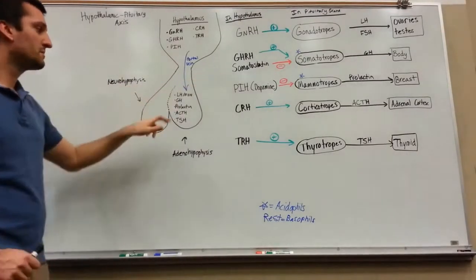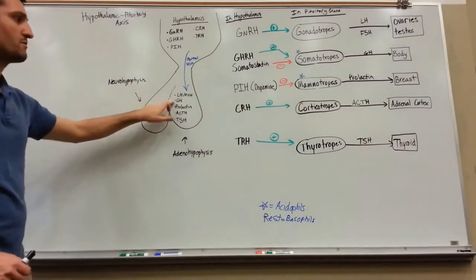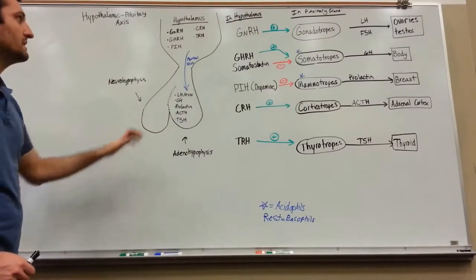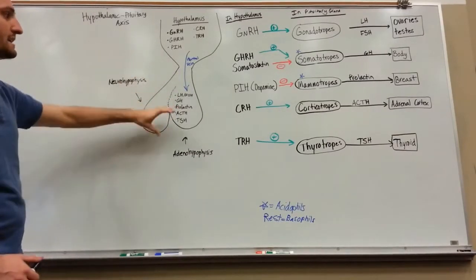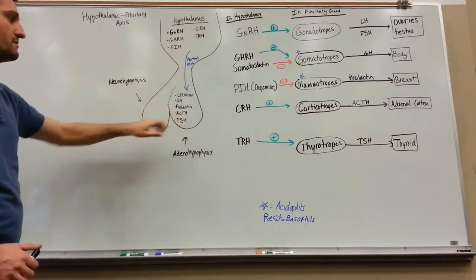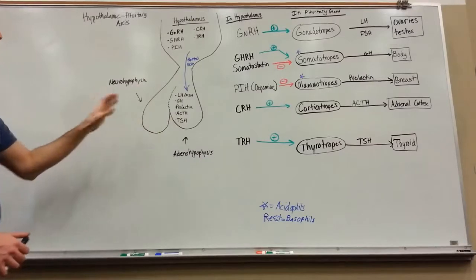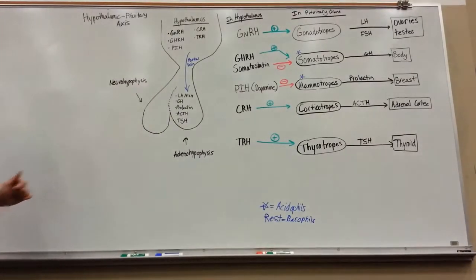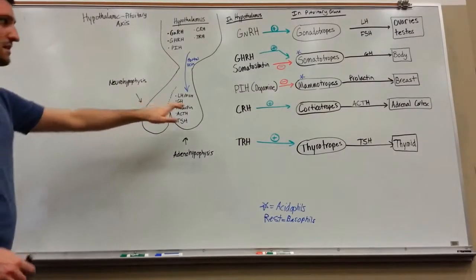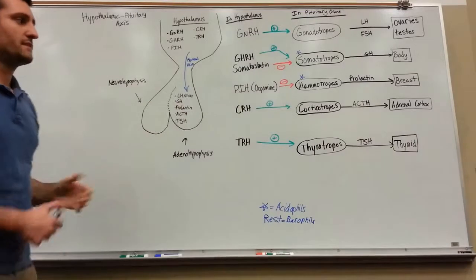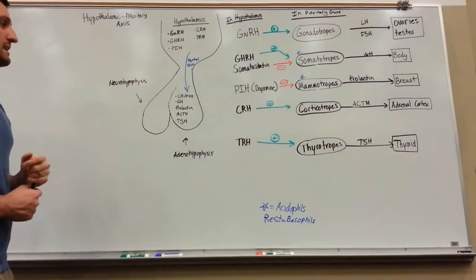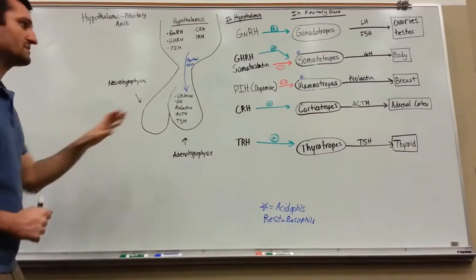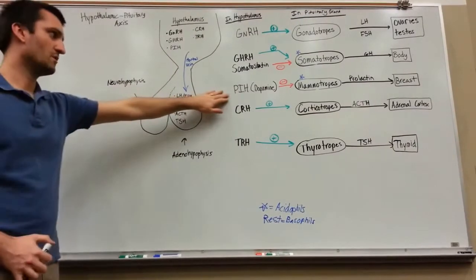Somatostatin is going to inhibit the release of that growth hormone down into the body — so if you have somatostatin acting upon those somatotropes, that's going to be inhibitory. PIH stands for prolactin-inhibiting hormone, and that's going to be an analog of dopamine.